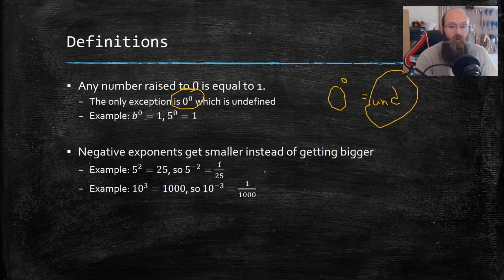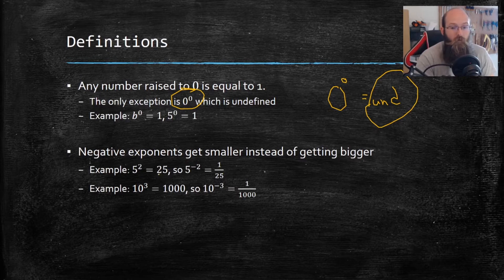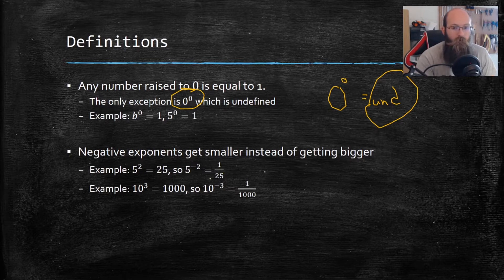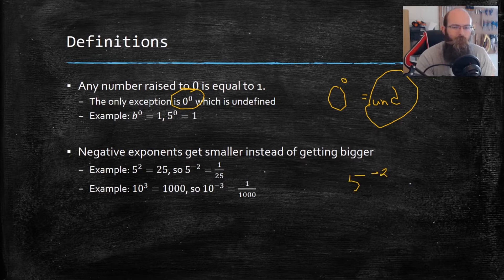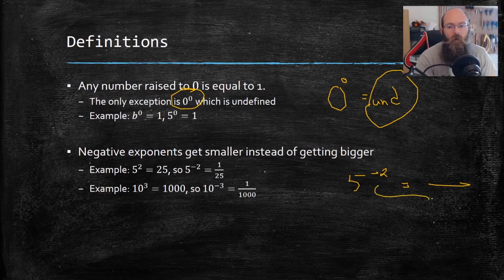Now negative exponents, they get smaller instead of getting bigger. So if I have 5 squared equals 25, well, 5 to the negative two equals one over 25. The reason for that is, if I have 5 to the negative two, to make that exponent positive, I'm actually going to make a fraction. And I'm going to bring it down to the bottom. So there's now one on top, and instead of 5 to the negative two, it's 5 to the positive two, but it's on the bottom of my fraction.